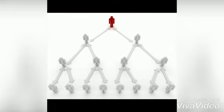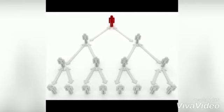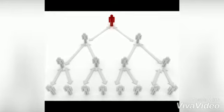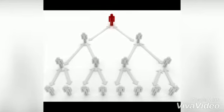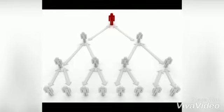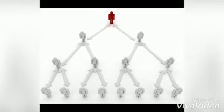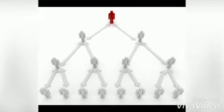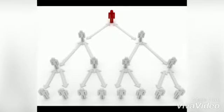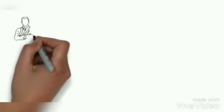Chain of Command. The continuous line of authority that extends from upper levels of an organization to the lowest level of the organization, clarifies who reports to whom.